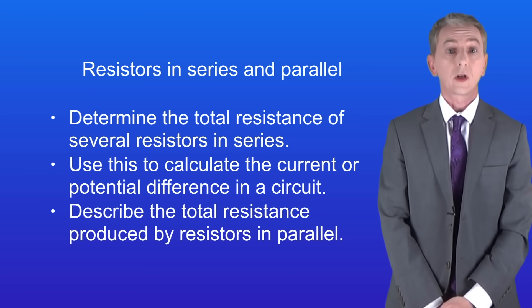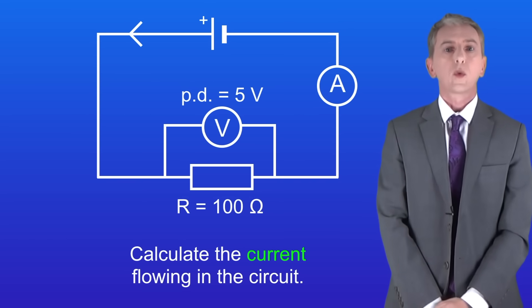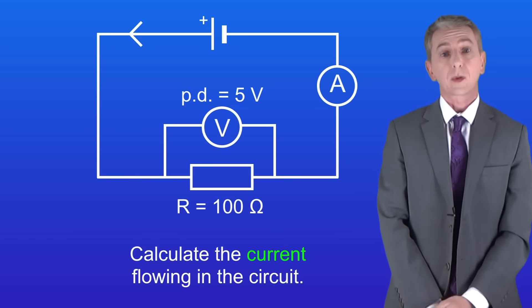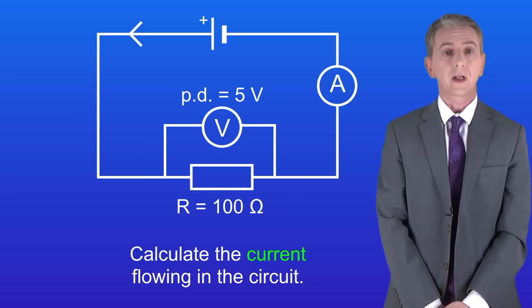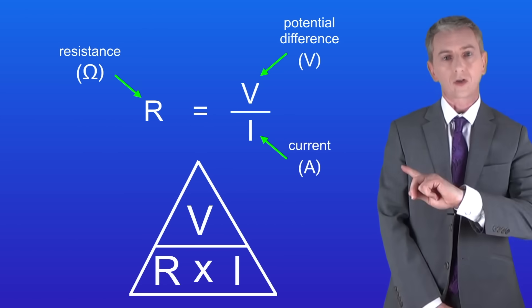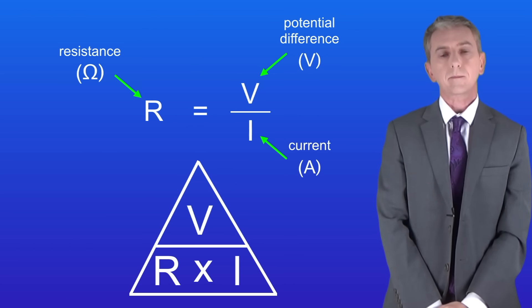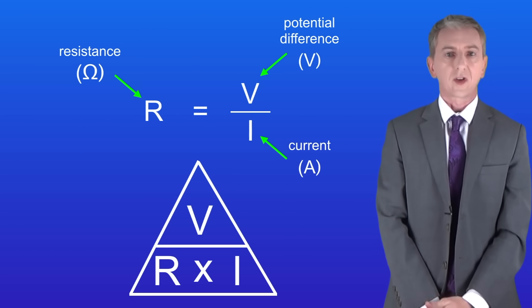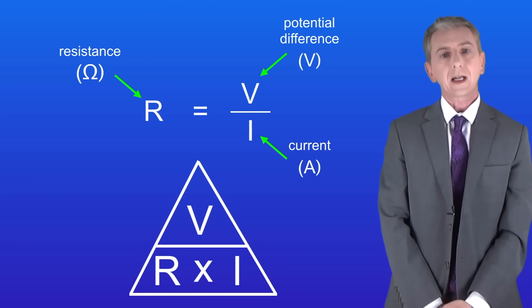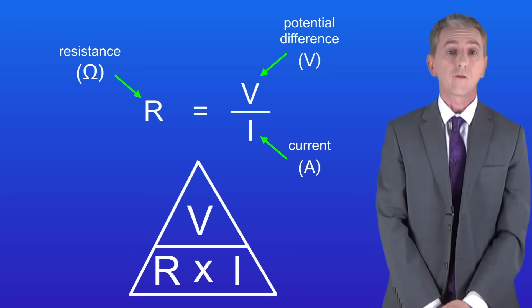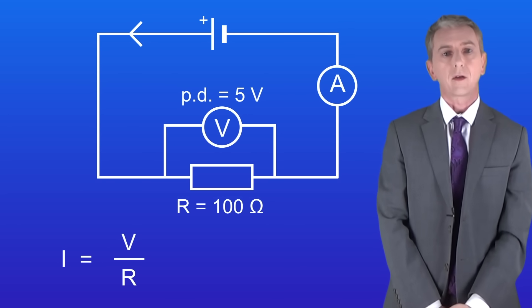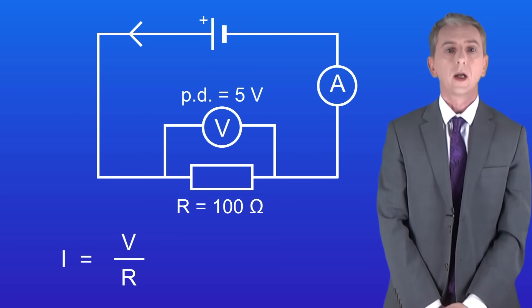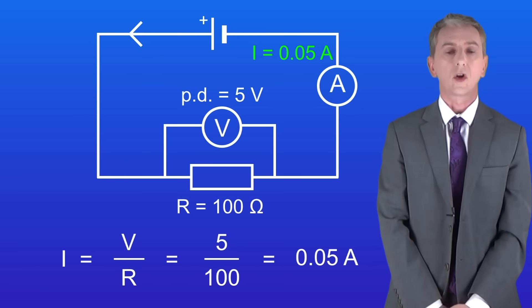In a previous video we looked at resistors and circuits such as this one. We've got a 100 ohm resistor with a potential difference of 5 volts across it. The question is asking us to calculate the current in the circuit, and to do that we're going to use this equation. Remember, you're not given this in the exam. The resistance equals the potential difference divided by the current. To calculate the current we divide the potential difference by the resistance. Looking at the circuit we've got a potential difference of 5 volts and a resistance of 100 ohms, giving us a current of 0.05 amperes.